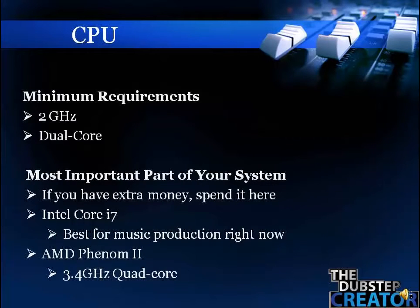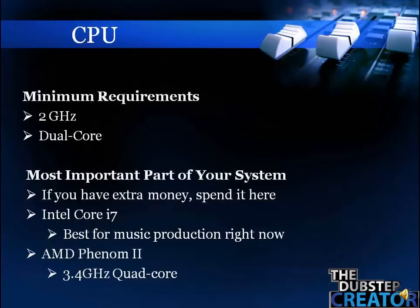As far as the CPU goes, the minimum requirements you want to look for are 2 GHz of processing speed and at least a dual core processor. The CPU is the most important part of your system, so if you have any extra money it's a good idea to spend it here. Some good ones are the Intel Core i7 — that's the best for music production right now. The AMD Phenom 2 is also a pretty good processor for the price, and most people say it's just as good as the i7.